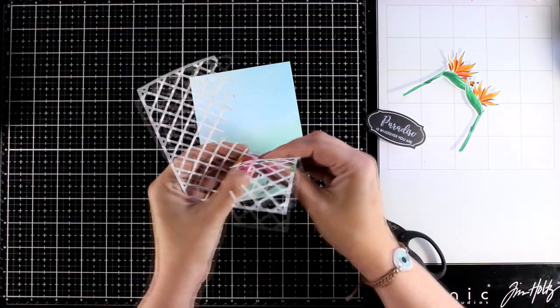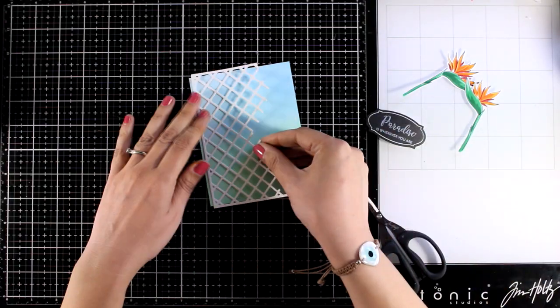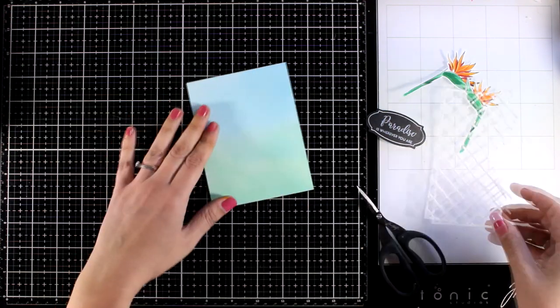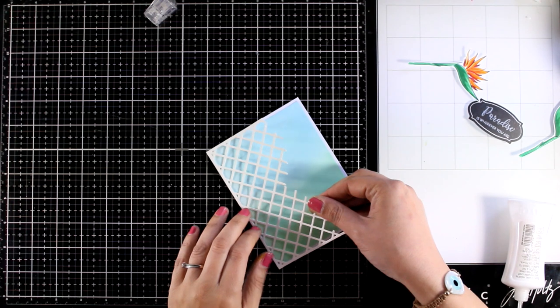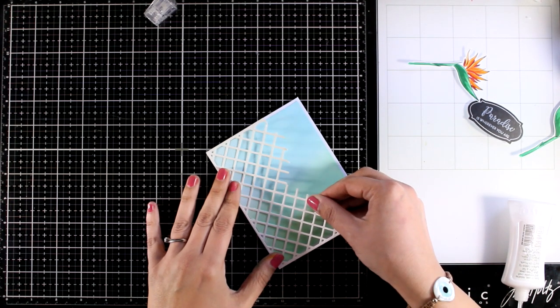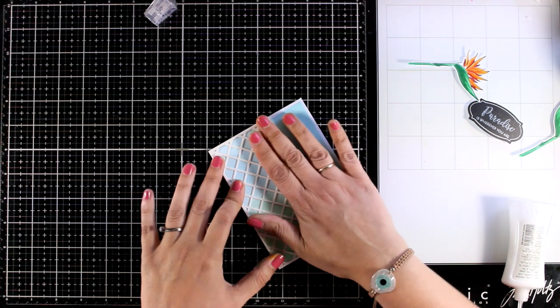And to glue this down you can either before you run it through your die cutting machine you can use some tape adhesive at the back so you can turn it into a sticker. This is a method that I always forget and I never plan ahead. Of course you can use spray adhesive or like I did I went with my trusted Nuvo Deluxe glue at the back.